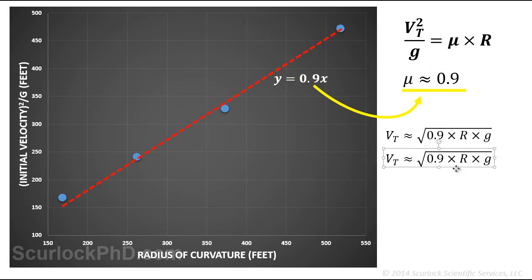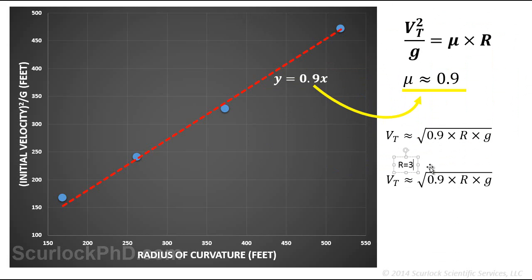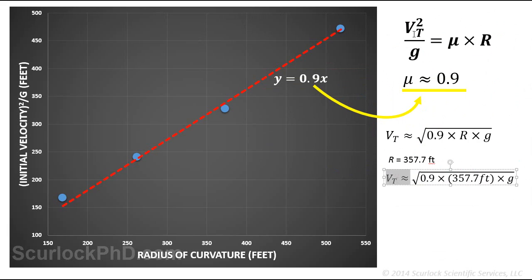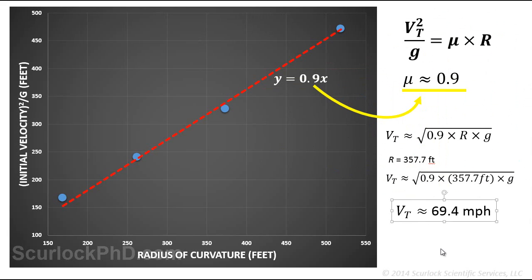Returning to the subject accident, the estimated radius of curvature was 357.7 feet. Putting this into the equation yields a pre-yaw speed estimate of 69.4 miles per hour.